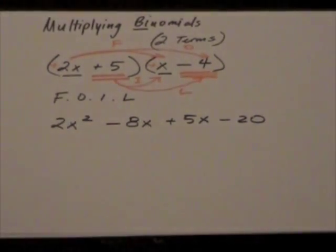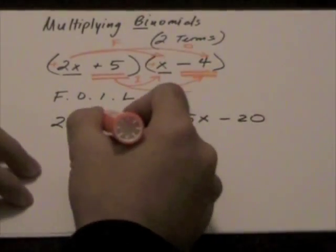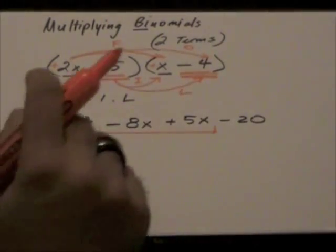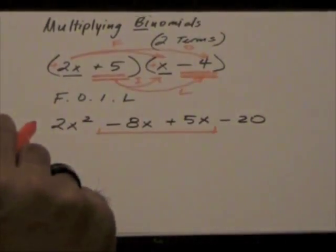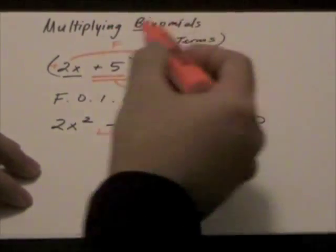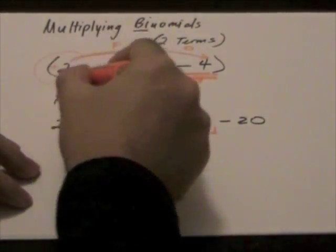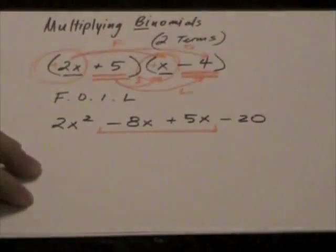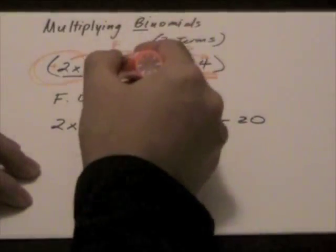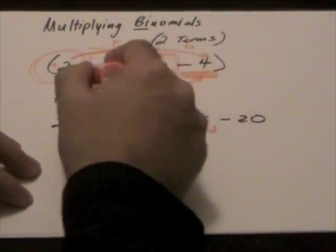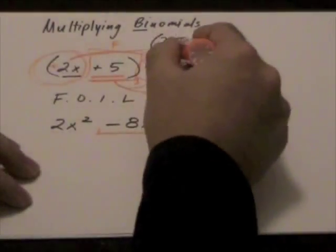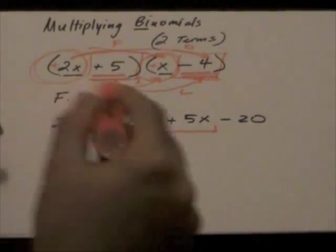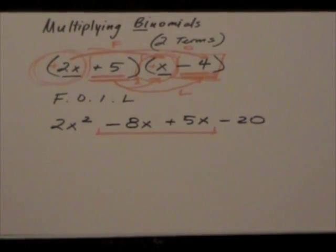Now, often times when we're multiplying binomials, this middle term usually can be simplified even further. How do we know when we're looking at that? Well, we're looking to see, is this first term of our binomial a like term with this term? Is this term of the binomial a like term with that? And if they are, then this middle term will be simplified.